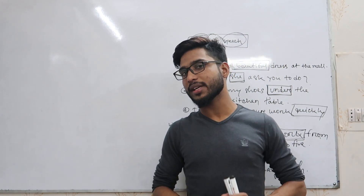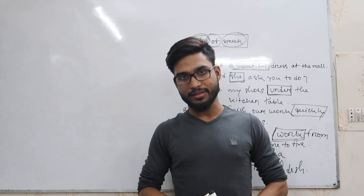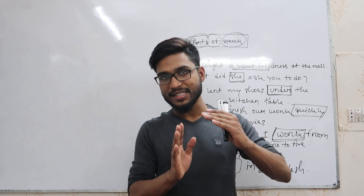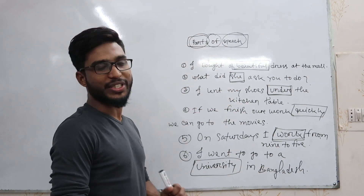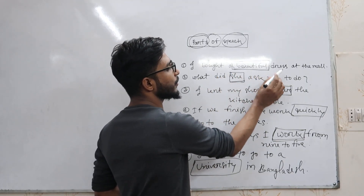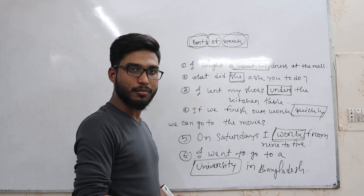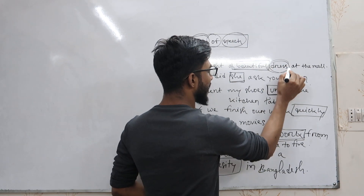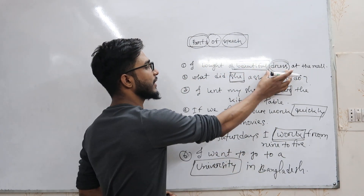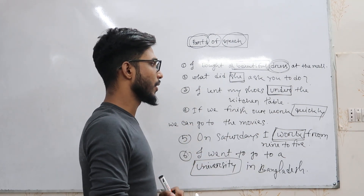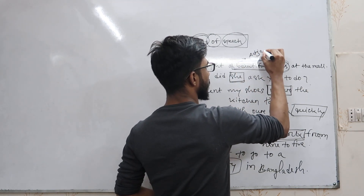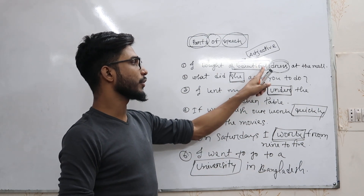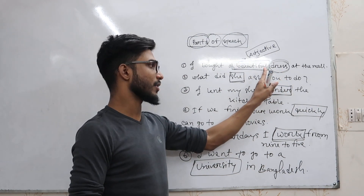Now we have to start with the first question. We need to know which part of speech is used. The first sentence is: I bought a beautiful dress at the mall. Here, 'beautiful' is an adjective.